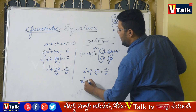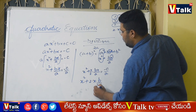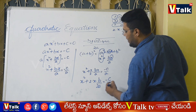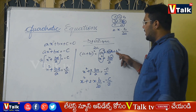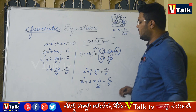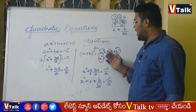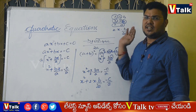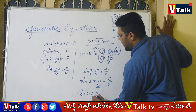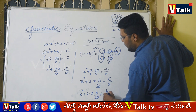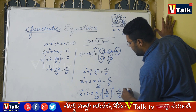x squared plus 2 into x into b by 2a equal to minus c by a. Then x squared plus 2 into x into b by 2a plus b by 2a whole square is equal to minus c by a plus b by 2a whole square.